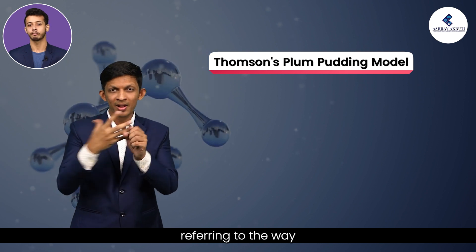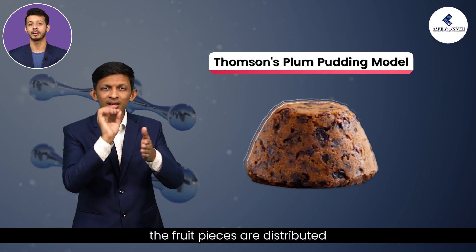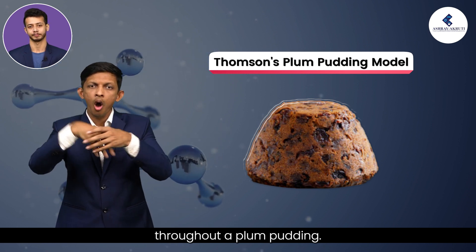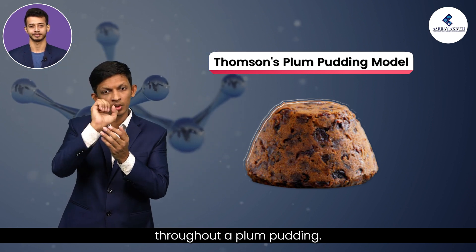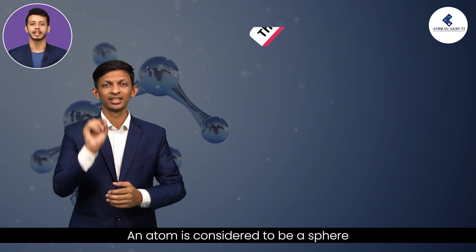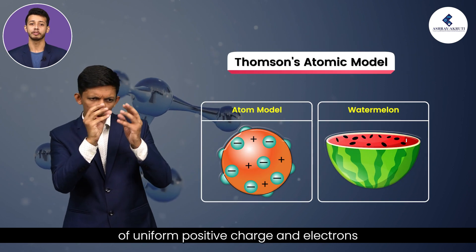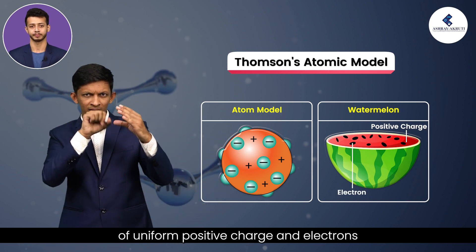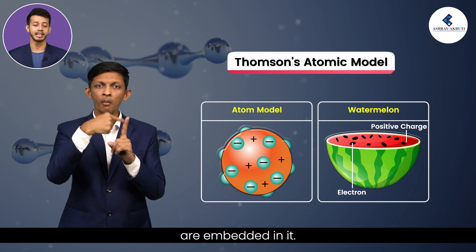Referring to the way the fruit pieces are distributed throughout a plum pudding, an atom is considered to be a sphere of uniform positive charge and electrons are embedded in it.